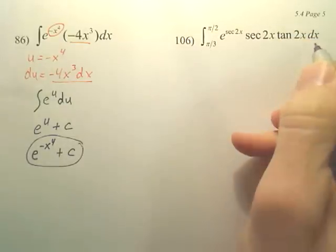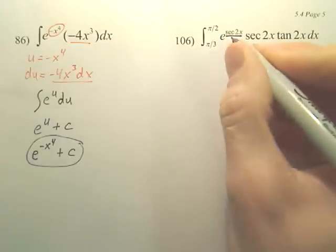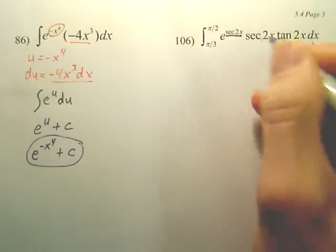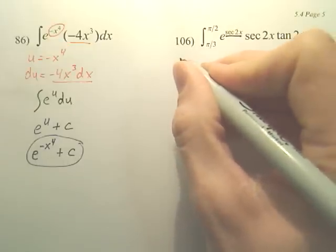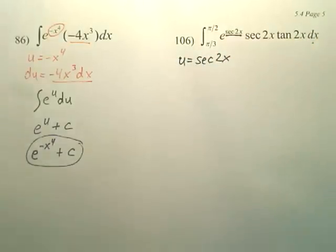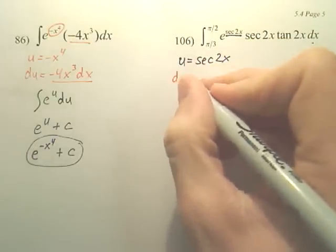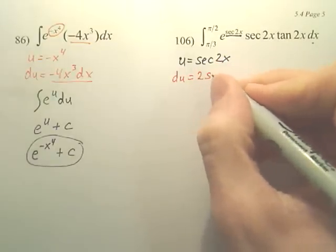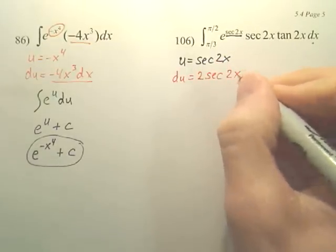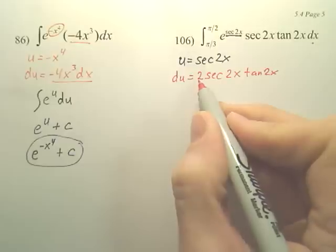Now, 106 here, you have to realize that this is going to be your u. Because when I derive that, I get all of that. But you've got to be very careful. u is secant 2x. But when I derive secant 2x, du is actually 2 secant 2x tangent 2x, and a lot of people forget that 2 there.